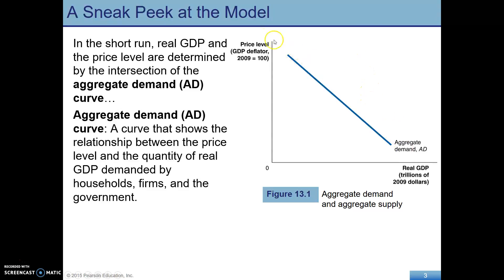Another key distinction is what's happening on the axes. Instead of just the price of a single good, this is the price level — a representation of the general level of all prices in the economy. We could measure that with the GDP deflator or some other measure of prices, like CPI.